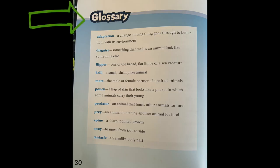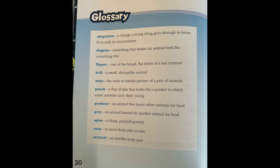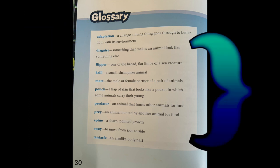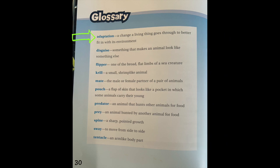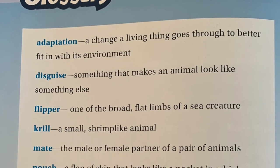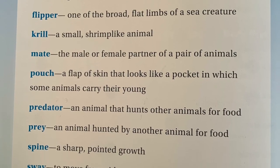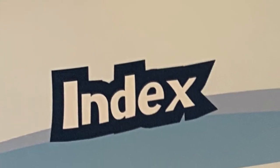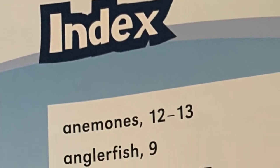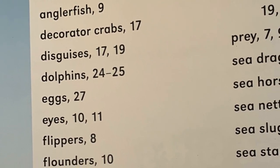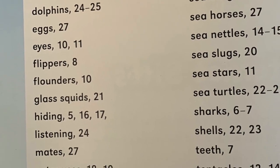Oh look, here's the glossary. The blue words are vocabulary words and the black words tell us what those vocabulary words mean. The first word is adaptation — an adaptation is a change a living thing goes through to better fit with its environment. That's the glossary, boys and girls. And at the end is the index, which lists vocabulary words and what pages we can find those words on.